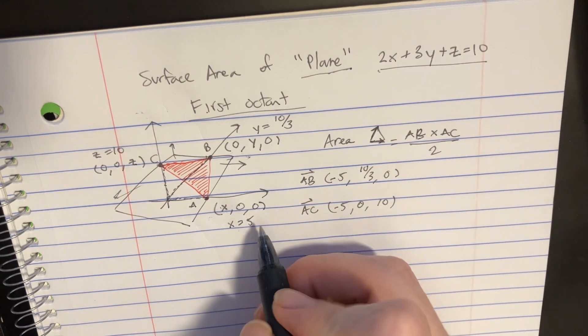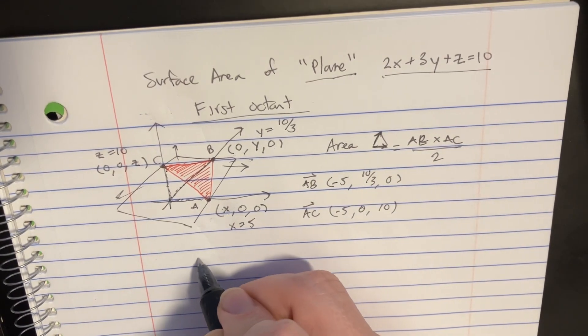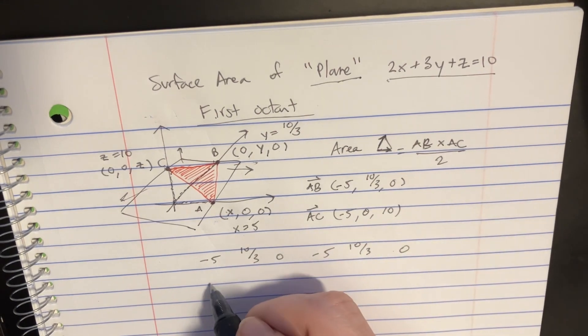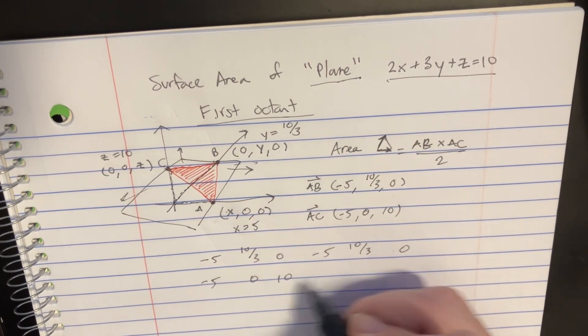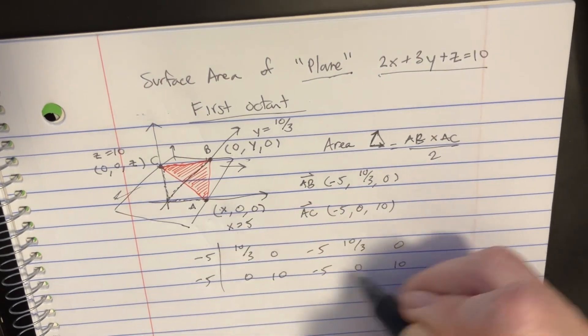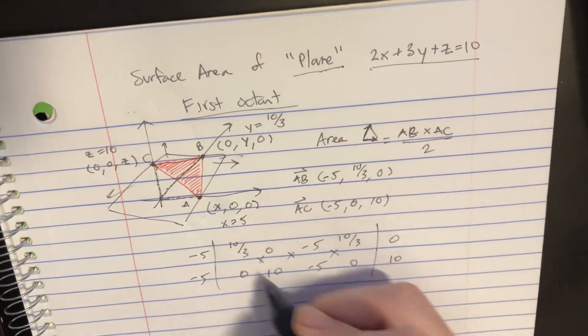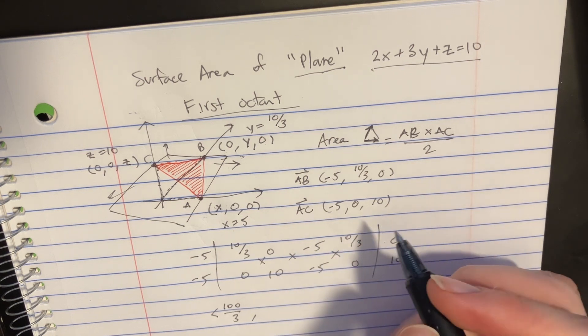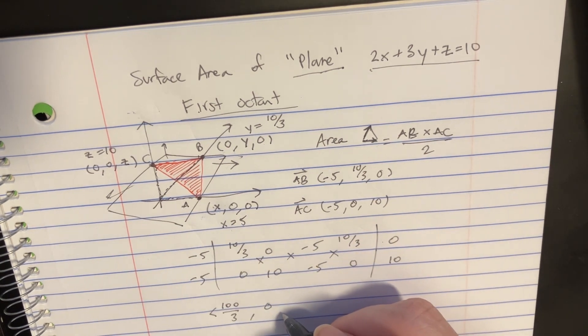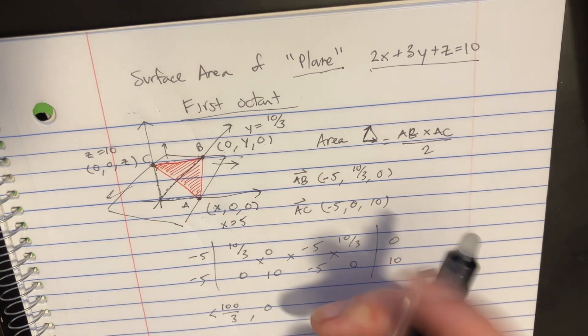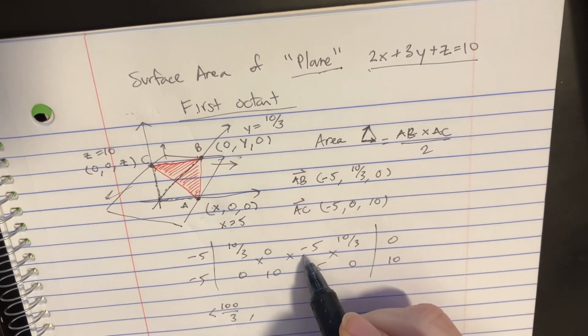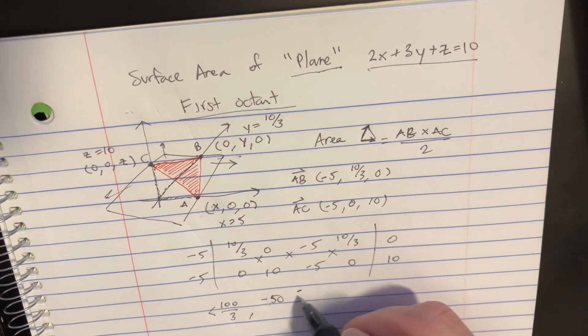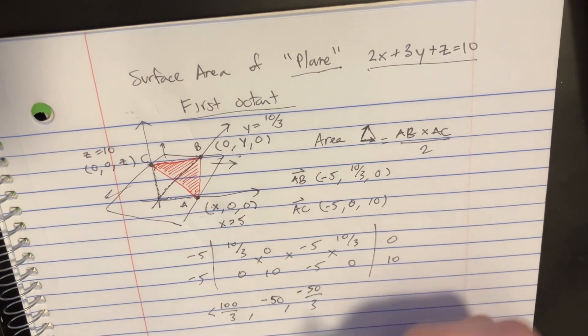Then we're going to try to cross these two things. It's actually a pretty easy calculation. We'll just say minus 5, 10 over 3, 0, and we'll do this like that: minus 5, 0, 10. Then we'll cross these. We'll get 100 over 3 for the first piece, we'll get 0 in here—oh no, that's a 10 right there—and we're going to get minus 50 over here. Then we're going to get positive 50 over 3.